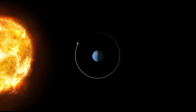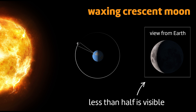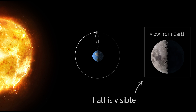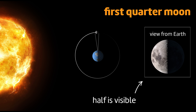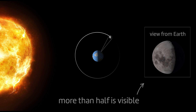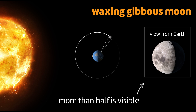At first, we can only see a thin sliver of the light that reflects off the Moon. We call this a waxing crescent Moon. When the Moon reaches a quarter of the way around its orbit, we can see half of its bright side. We call this the first quarter Moon. As the Moon continues, we see more than half of its bright side. We call this a waxing gibbous Moon.